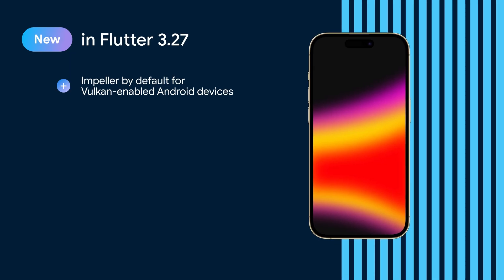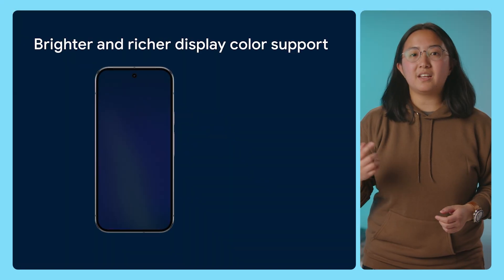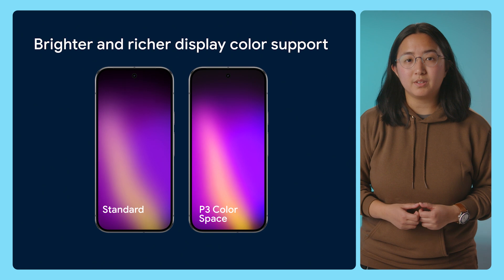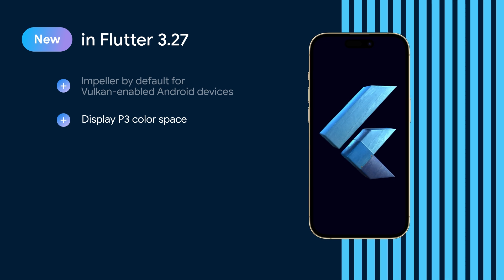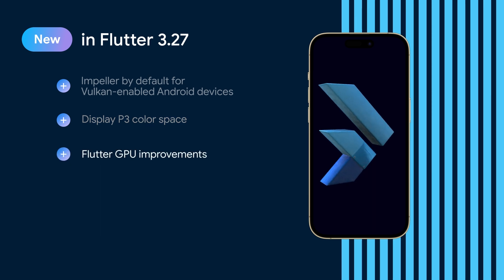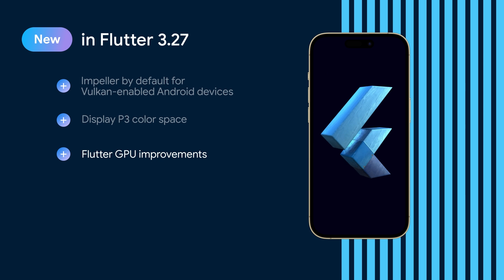Even more exciting than those numbers are the new possibilities that Impeller unlocks. Earlier in the show, Kate shouted out a Flutter developer who built a cool demo to showcase a significant increase in Flutter's fidelity on iOS. That fidelity will only further improve given the added support for the display P3 color space in Flutter 3.27, meaning that you get to take full advantage of high-definition iOS displays. Another exciting addition driven by Impeller work is Flutter GPU, a new low-level graphics API we announced as a preview in early 2024. Flutter GPU gives you access to the machine's GPU from Dart code and enables you to build custom renderers for the most complex graphics, including 3D.